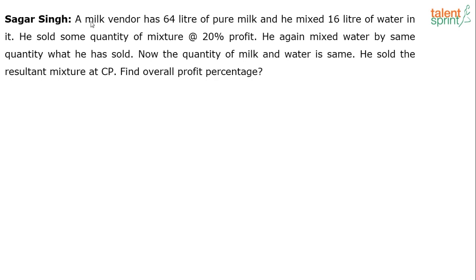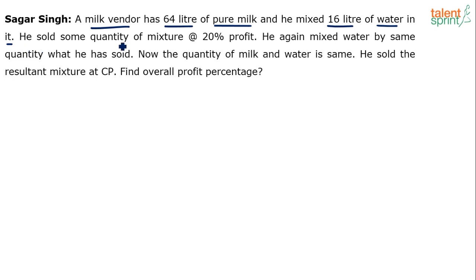So, a milk vendor has got 64 liters of pure milk and he has mixed 16 liters of water in it. So he's got 64 plus 16, which is 80 liters of mixture. He sold some quantity of this mixture — we don't know how much — but some quantity at 20% profit.